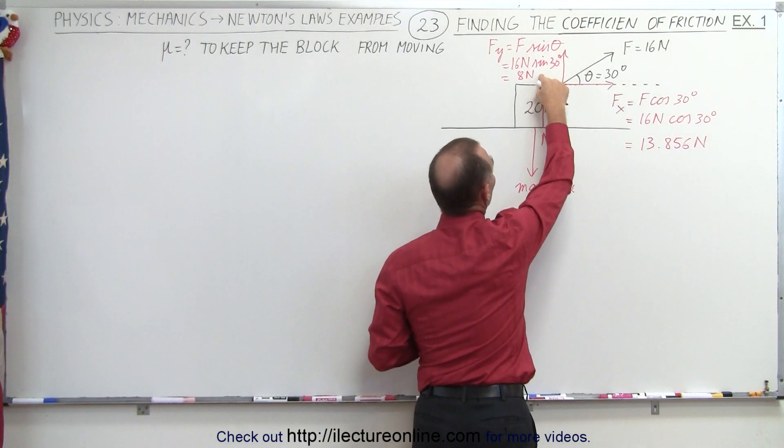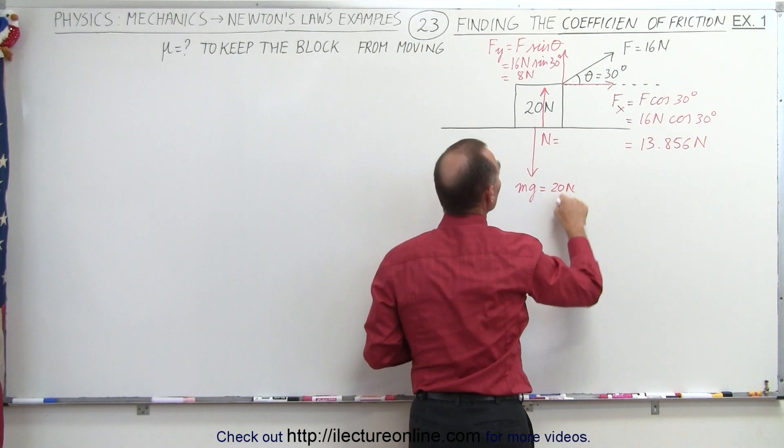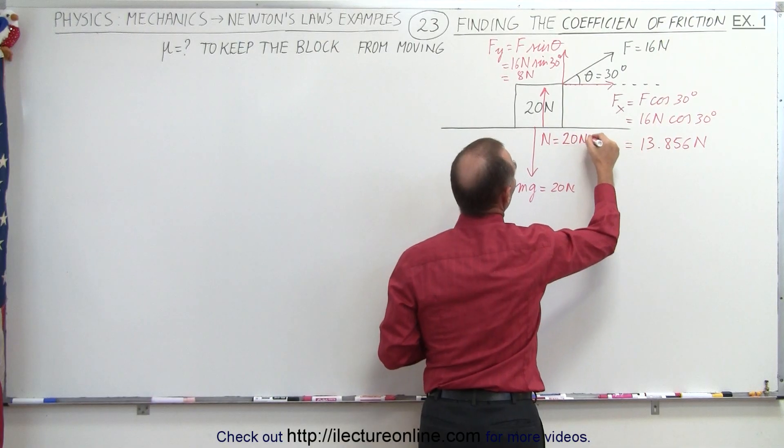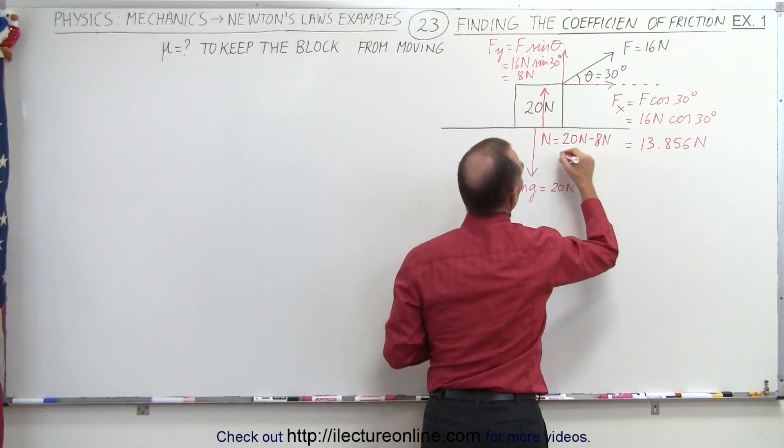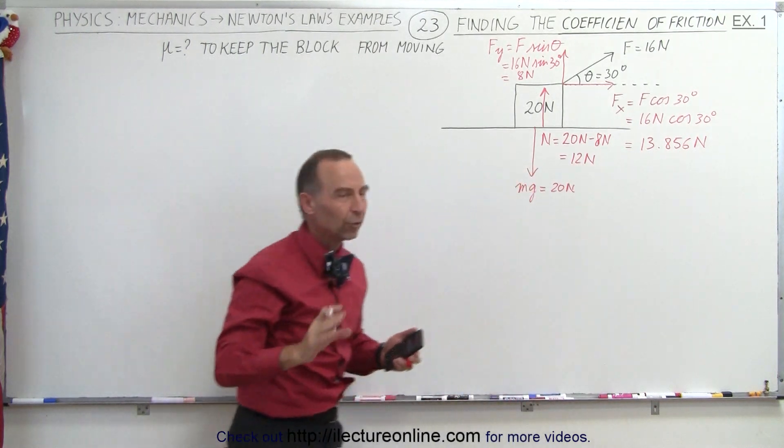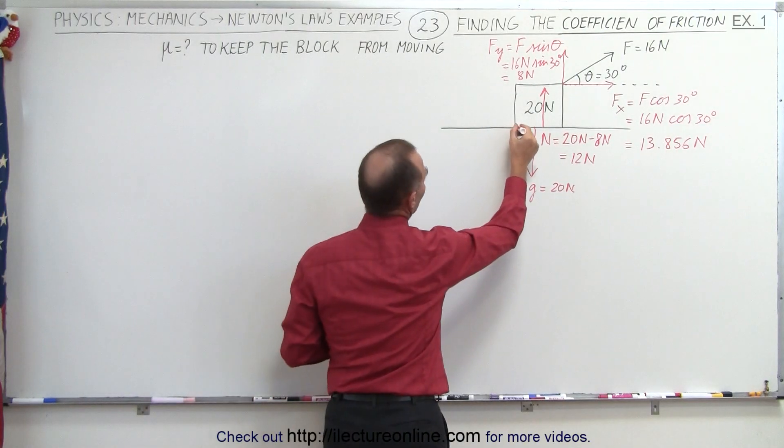Therefore the normal force will be 20 newtons minus the 8 newtons from this force. So 20 newtons minus 8—that's 12 newtons. The normal force is only 12 newtons in this case. Now we also have a friction force acting on this.